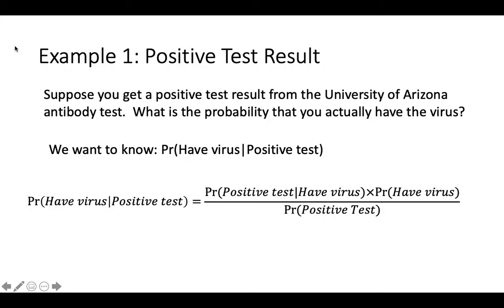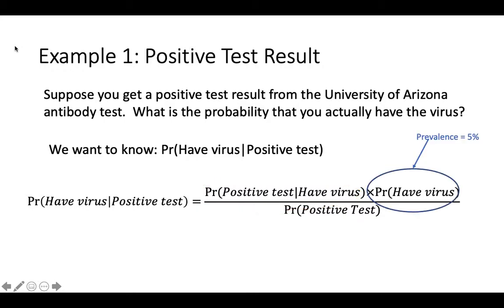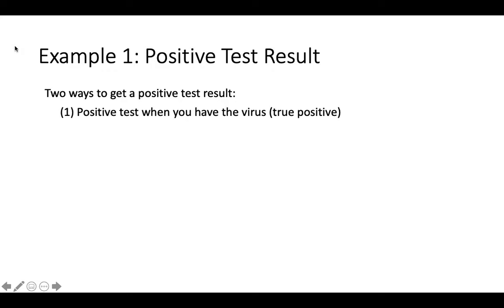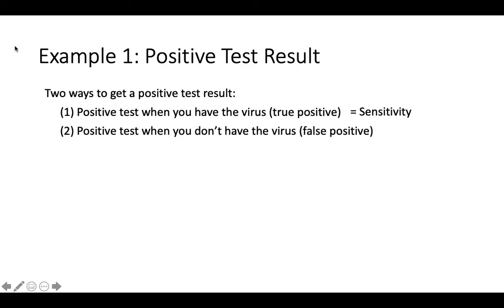We know two pieces of this equation. The probability of having a positive test result if you have the virus is the sensitivity of the test. The probability that you have the virus is its prevalence in the population. There are two ways that you can have a positive test result. First, you can have a positive test result when you have the virus — this is the sensitivity of the test. Second, you can have a positive test result when you don't have the virus — this is the false positive rate, which is 1 minus the specificity of the test.